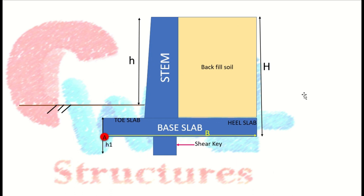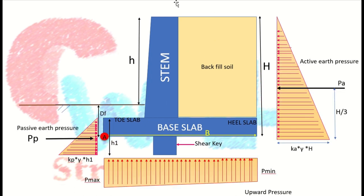Here is a basic cross-section diagram of the retaining wall. We already discussed the components of retaining wall in the last video — the link is in the description box. For this case where the backfill soil is dry, not submerged, and without surcharge, the pressure diagram shows a triangular horizontal pressure acting on the retaining wall due to the retained soil. The upward pressure diagram is due to the soil below the base, which resists the downward pressure from the self-weight of the retaining wall elements.